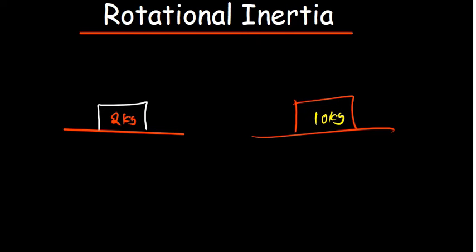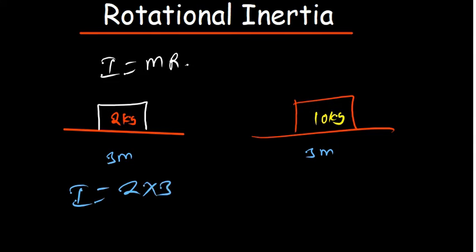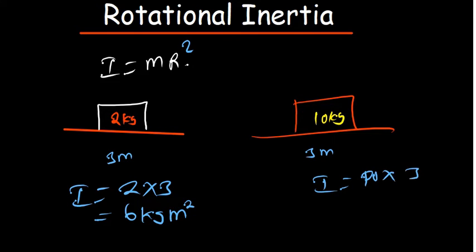The general formula for inertia is mass times radius squared — mr². If the radius is 3 meters for both objects, then inertia for the first object is 2 times 3 squared, and for the second object inertia equals 10 times 3 squared, which is 90. The units are kg·m².